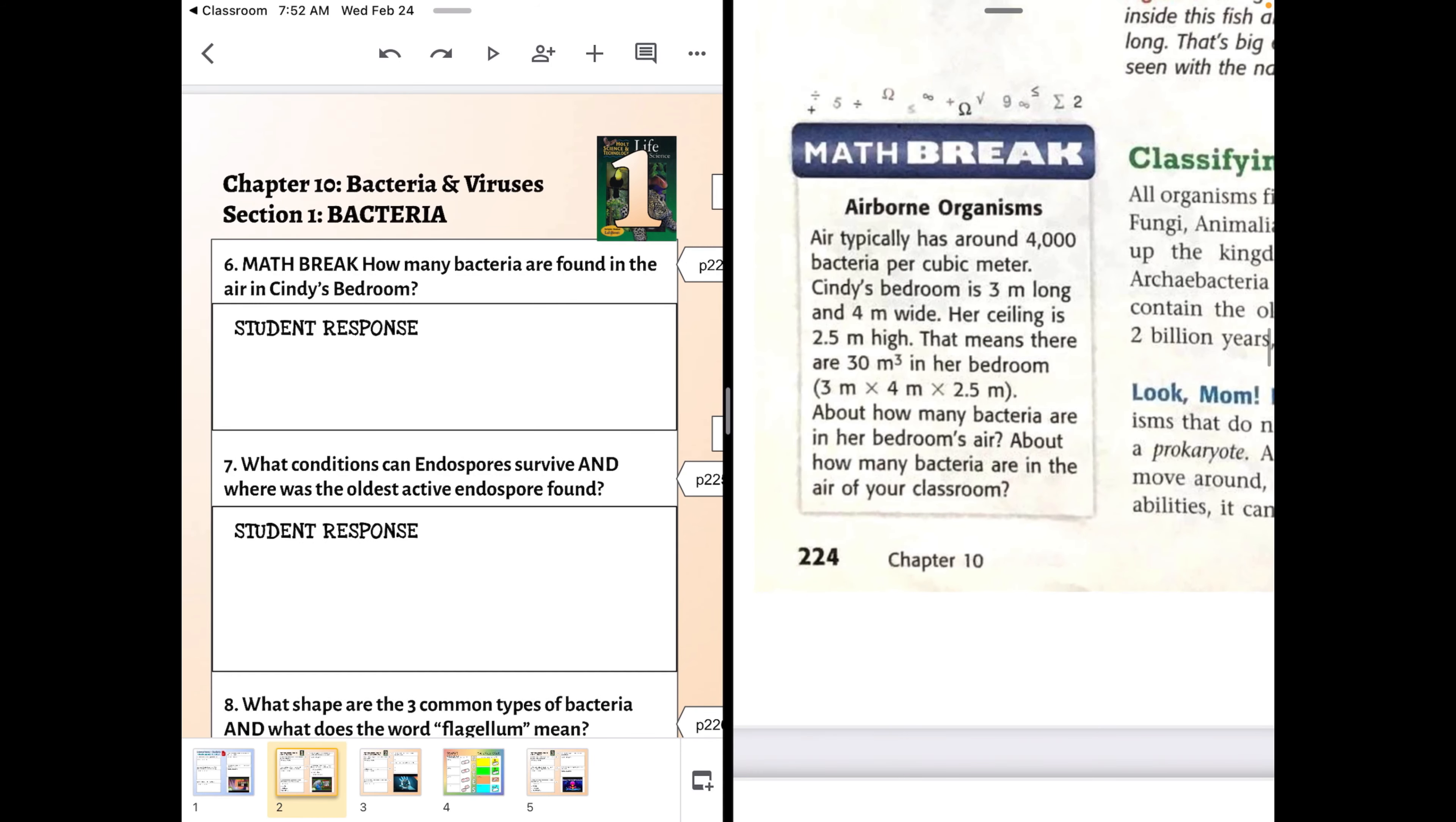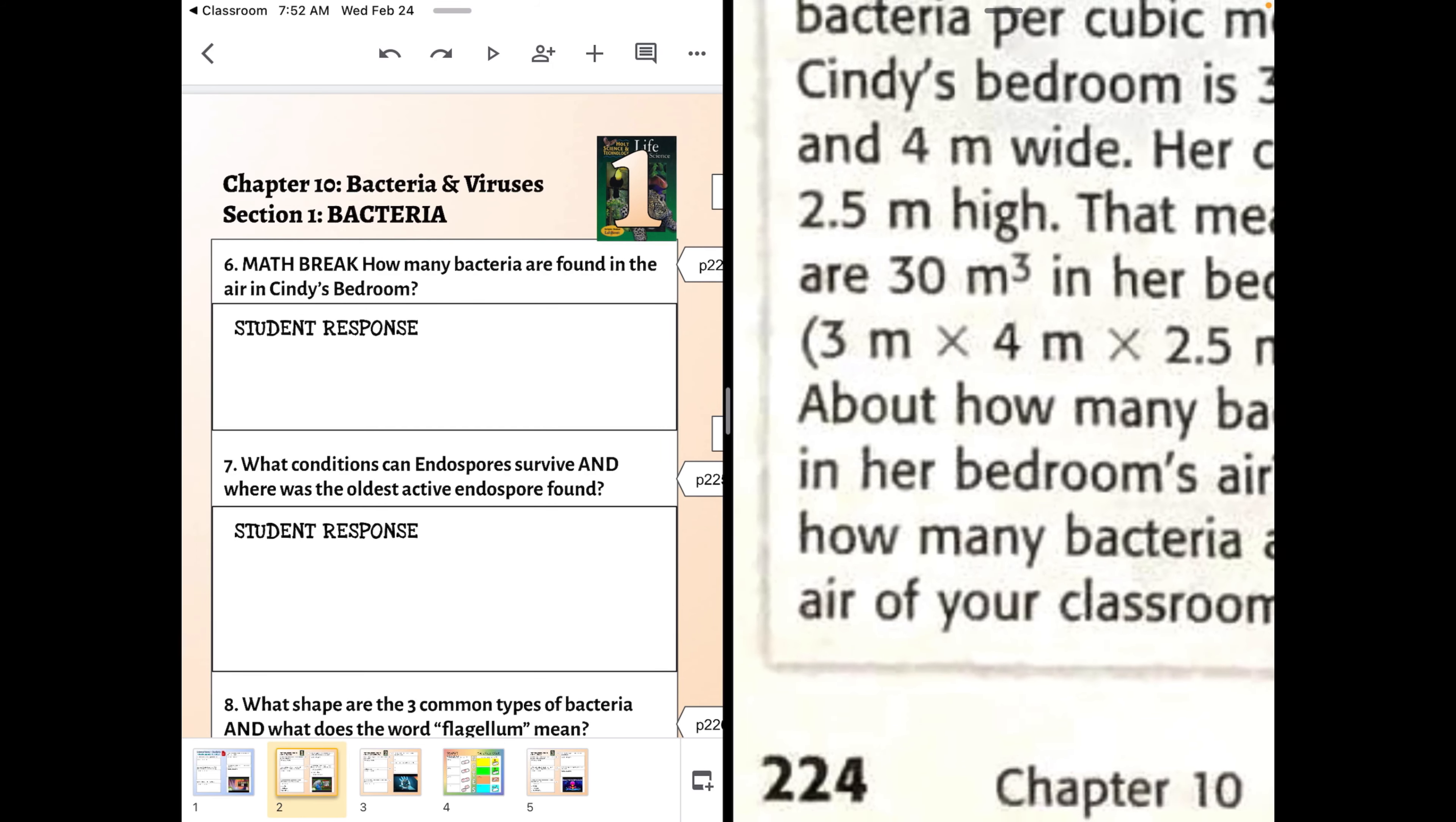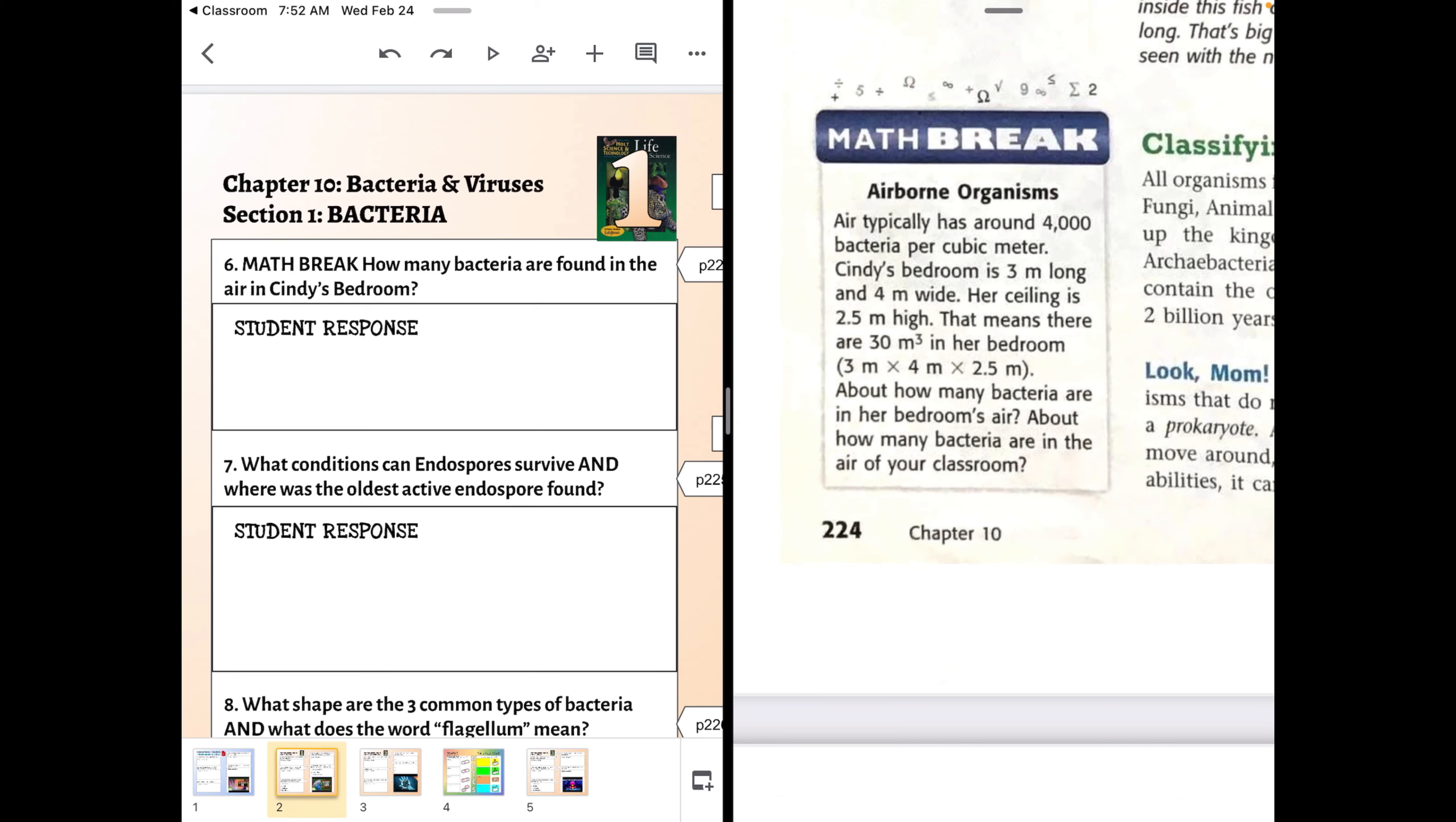And here we see that air has typically 4,000 bacteria per cubic meter, and Cindy's bedroom is 3 by 4 by 2.5 meters. So they multiplied those to figure out that Cindy's bedroom is 30 meters cubed. They already did half the math for you. If each cubic meter has 4,000 bacteria and her room is 30 meters cubed, you need one more step to figure out how many bacteria could be floating around in her room.